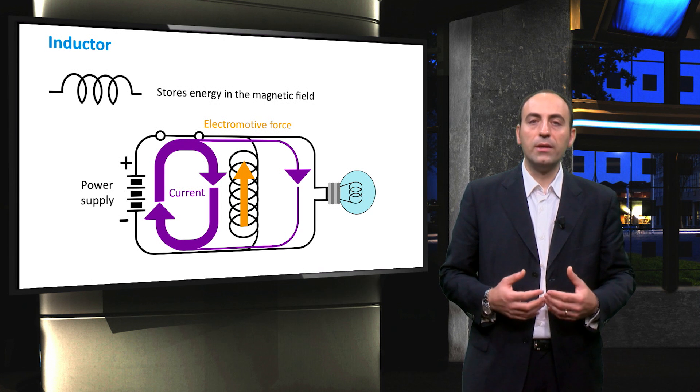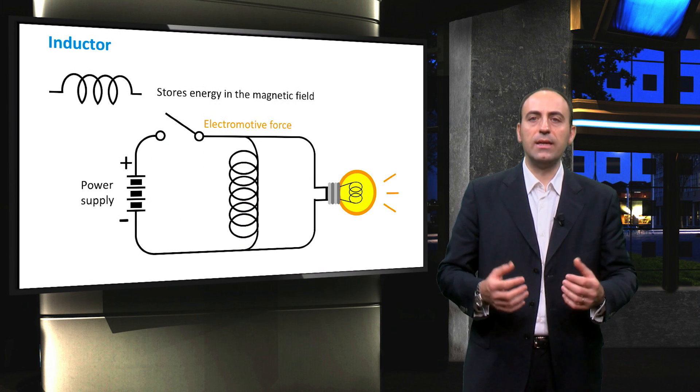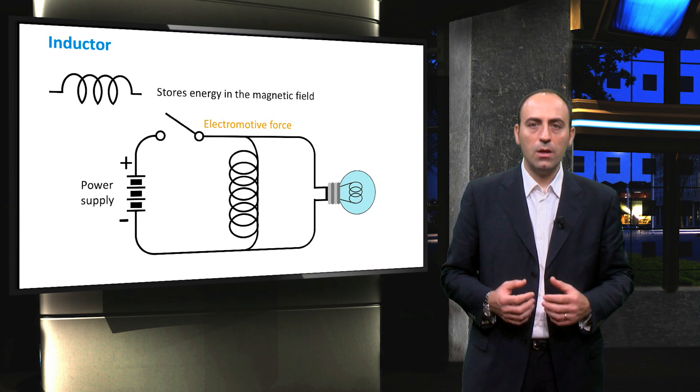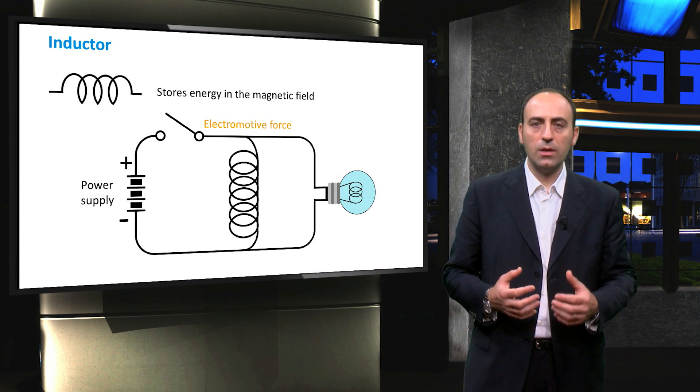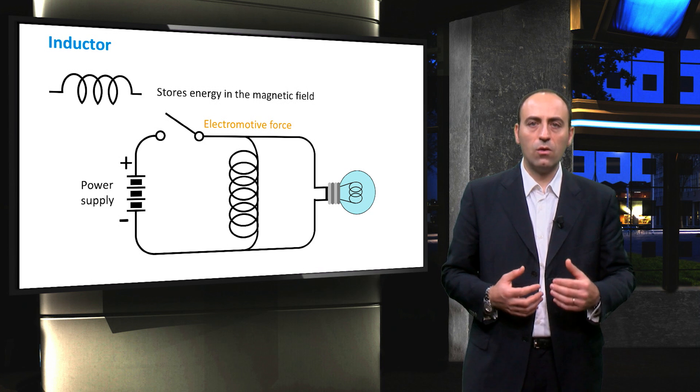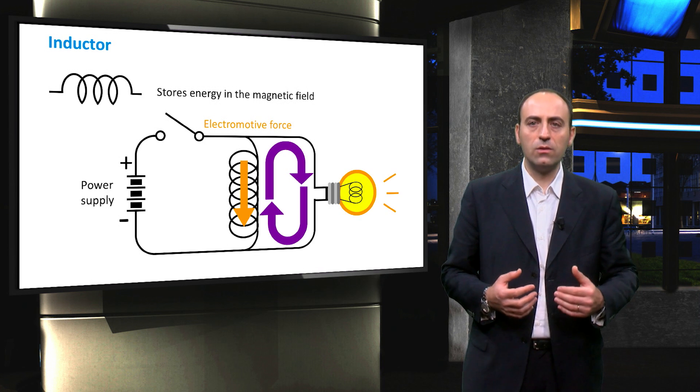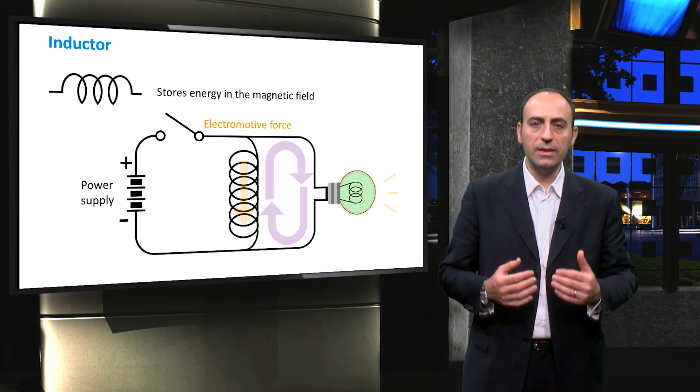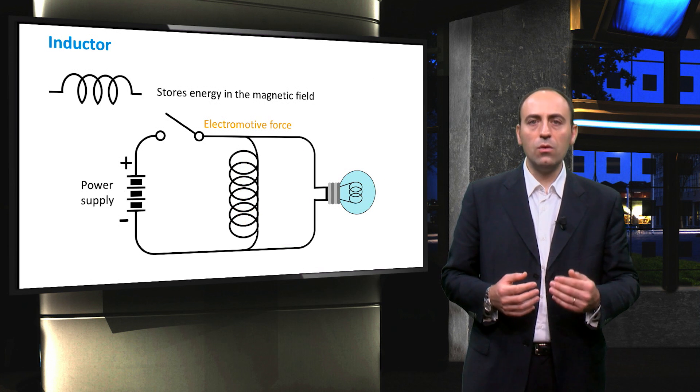Then, opening the switch, what happens is that the bulb burns very brightly and then quickly goes out. The reason is again the inductor. Indeed, the magnetic field around the coil keeps the current flowing in the coil until the field collapses and this current keeps the bulb lit for a period of time, even though the switch is open.